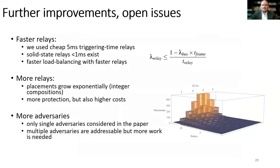This is mostly what we have tested so far, and there is obviously some room for improvements. For example, we can use much faster solid-state relays that have an operation time of under one millisecond. We can also use more relays on the bus, but care must be taken since wiring may become prohibitive and the number of placements grows exponentially. More complex scenarios with multiple adversaries may also be considered; so far we used only one adversary, which we assume to be realistic for in-vehicle networks.